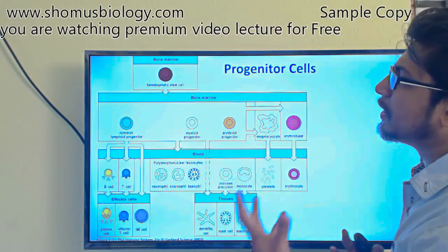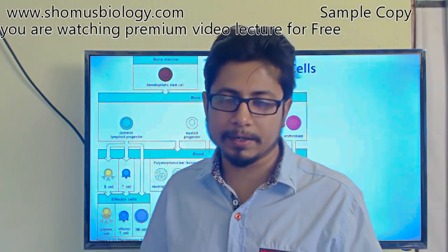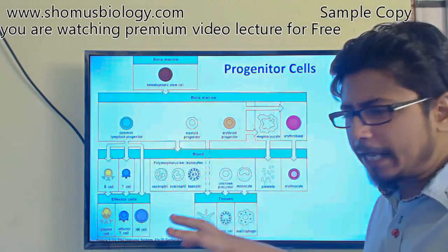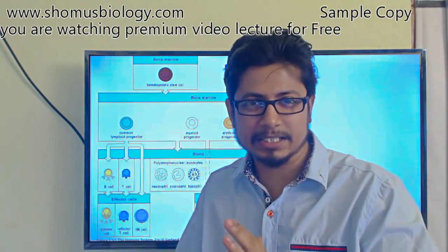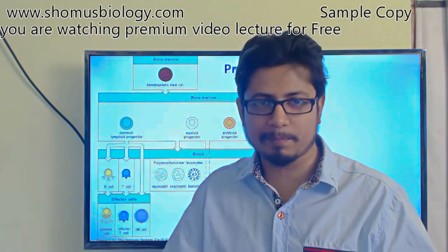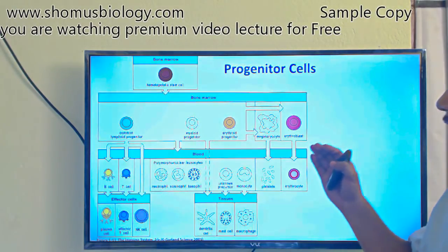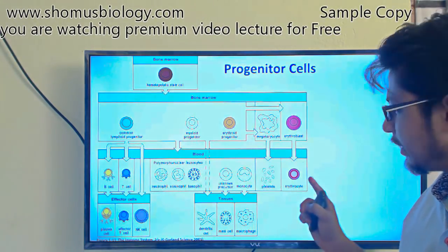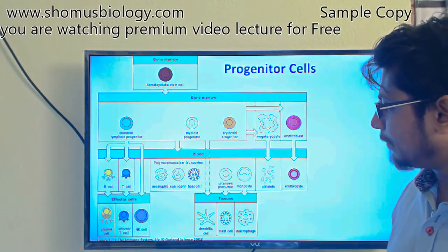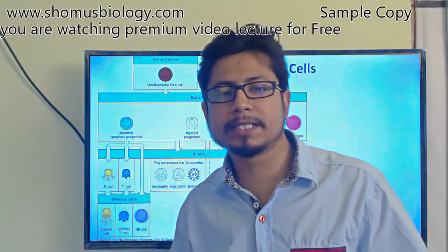Looking at all the blood cells available — because our blood is composed of many different types of cells — based on class 9 and 10 standard understanding, blood has three major types of cells: red blood cells, white blood cells, and platelets. Red blood cells carry oxygen and contain hemoglobin; platelets help to clot blood. All white blood cells function in the immune system.